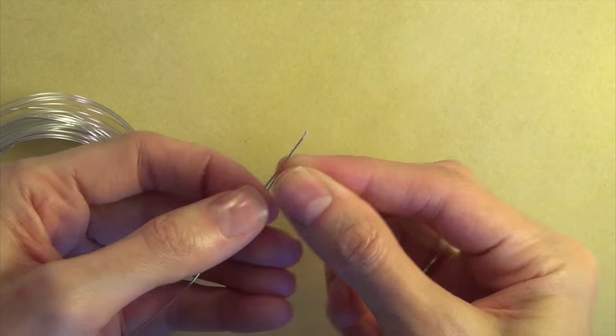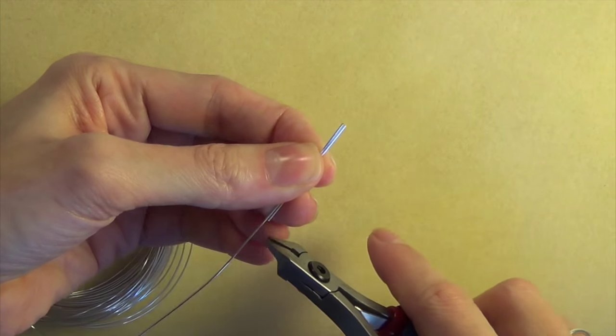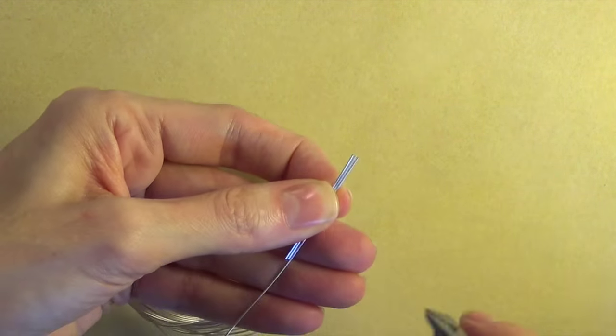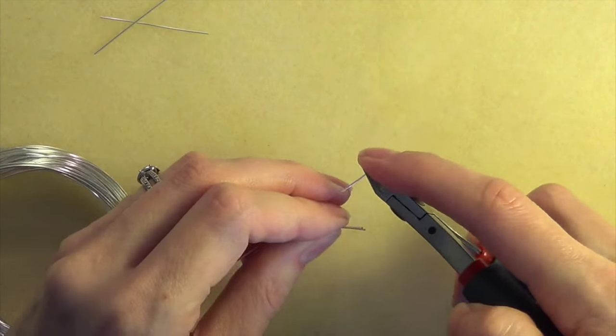Use the back of your flush cutters to cut the other end as well so that you have a nice flush cut on both ends of each piece of wire. For each spiderweb you want to make you'll need three equal lengths of wire. So we're going to make six of these because we're making a pair of earrings.